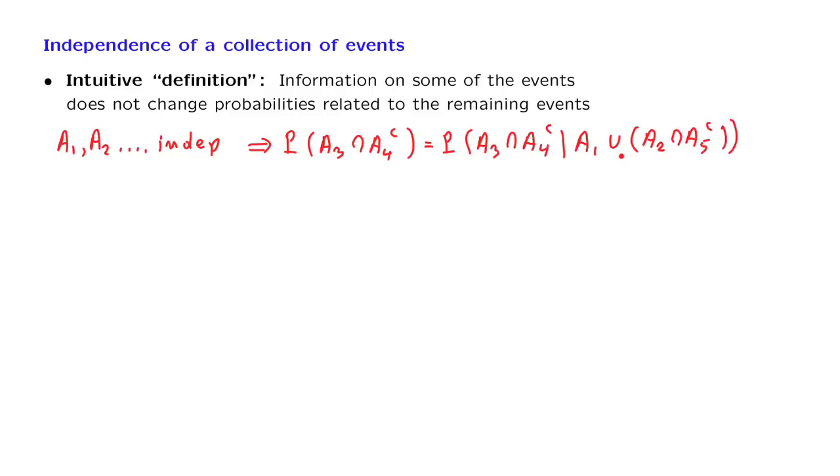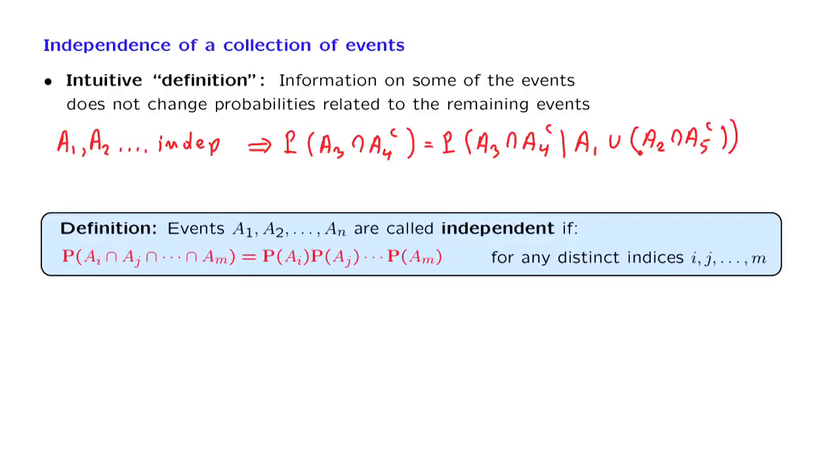I would like all relations of this kind to be true. This could be one possible definition, just saying that a family of events are independent if and only if any relation of this type is true. But such a definition would not be aesthetically pleasing. Instead, we introduce the following definition, which mimics our earlier definition of independence of two events.